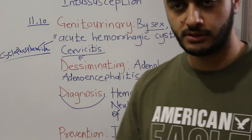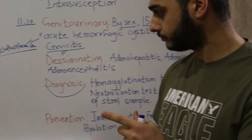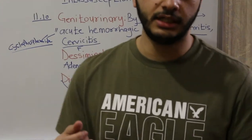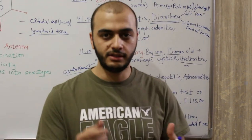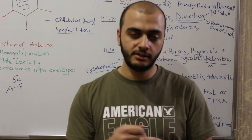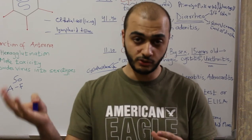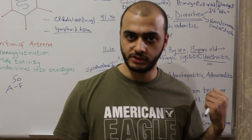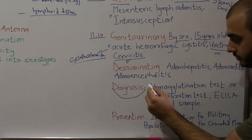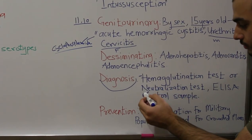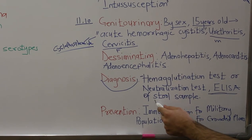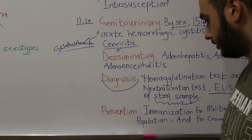We can diagnose adenovirus using the hemagglutination inhibition test. We take the patient's serum, mix it with the virus we have in the laboratory, and if the patient has antibodies against the virus, immune complexes form. When we then add RBCs that would normally agglutinate, agglutination is inhibited — hence the name hemagglutination inhibition test. We can also use the neutralization test or ELISA. Specimens are taken mostly from stool, since the virus is shed there.